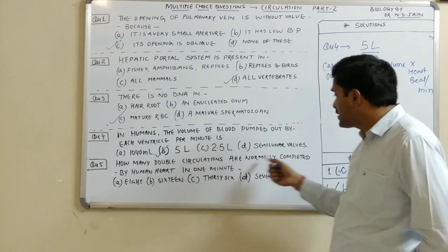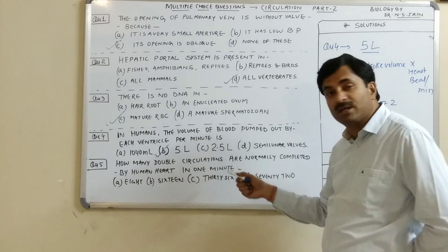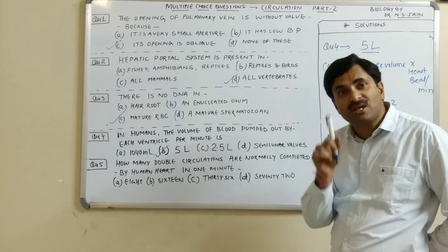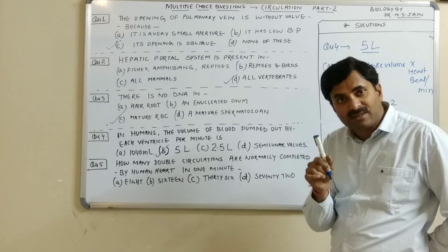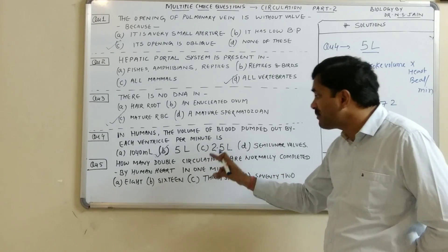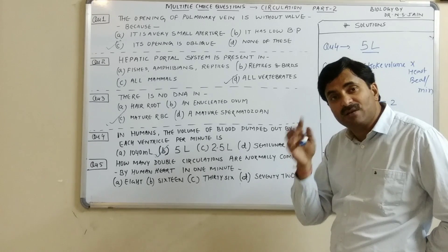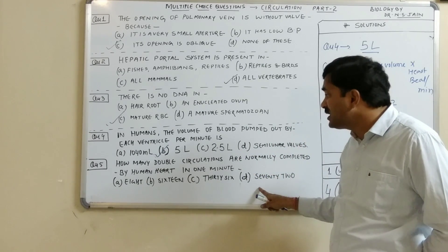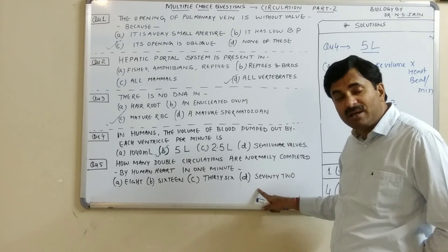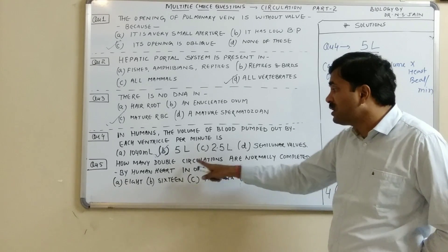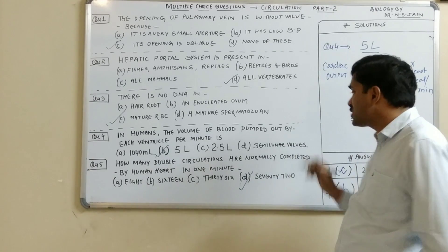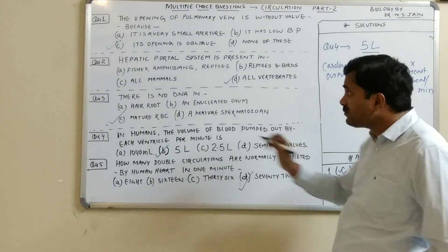Question number five: how many double circulations are normally completed by the human heart in one minute? Double circulation means that in each cardiac cycle the blood passes two times through the heart. Since the heartbeat per minute is 72, and one heartbeat equals one cardiac cycle, the answer is 72 double circulations per minute. Question number five answer is D.